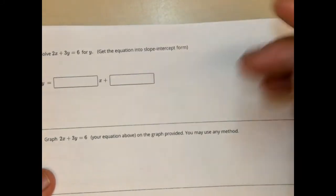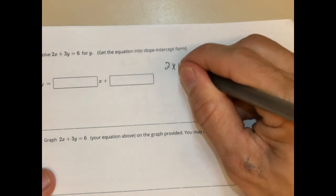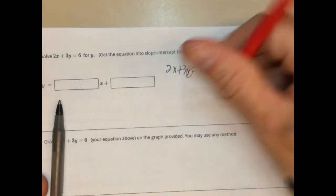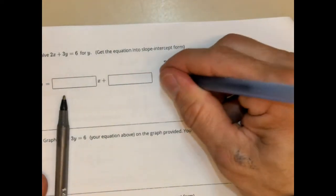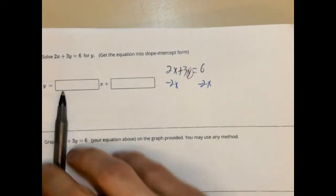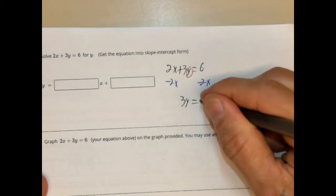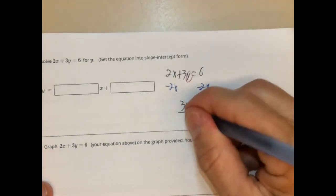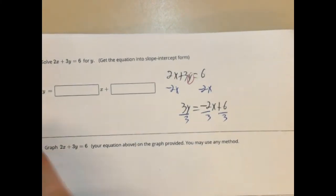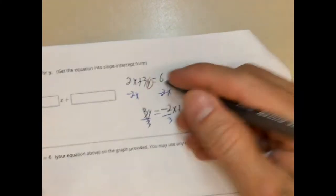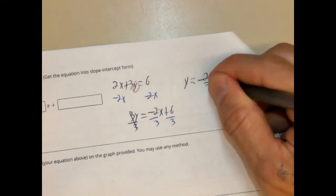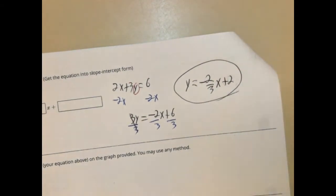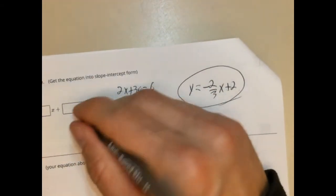Solve for y — it's another literal equation. 2x plus 3y equals 6, solving for y. We're going to subtract 2x from both sides first, so we have 3y equals negative 2x plus 6. We're going to get rid of the coefficient, which is 3, so we divide by 3. We'll have y equals negative 2 thirds x plus 2 — we have our rate of change and our y-intercept.